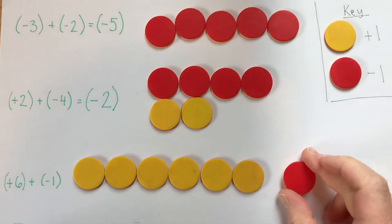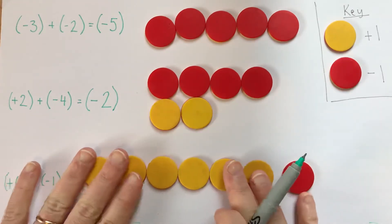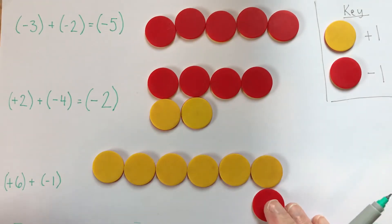Plus negative one. So this is our number. I'm just going to do the same thing. I'll put my zero pairs on the front end or the back end. It doesn't really matter.